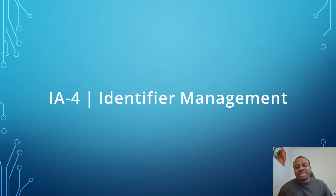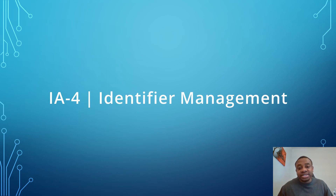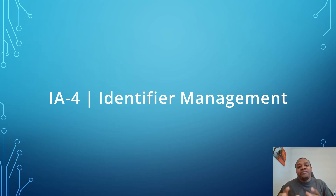Please note that some of the evidence identified in this video are subject to change, because these controls are implemented in different ways for different agencies and different systems. The evidence identified today are not the only evidence that should be requested to satisfy the control implementation for each control. There are many other evidence that can be requested, and the control implementation varies from system to system and agency to agency. These are just examples for the purpose of this video.